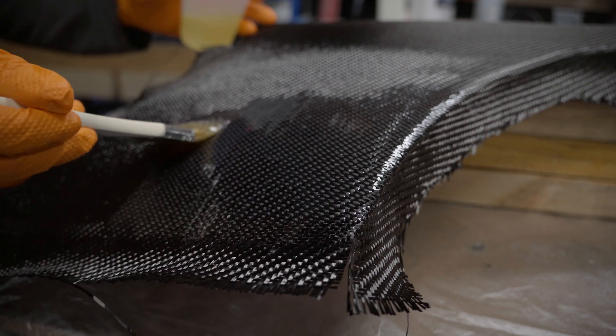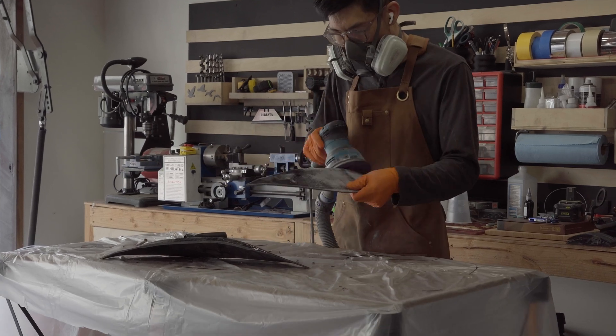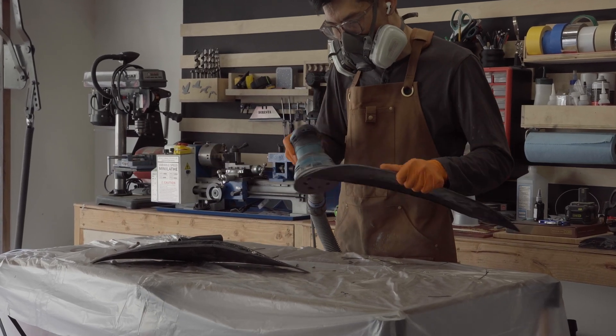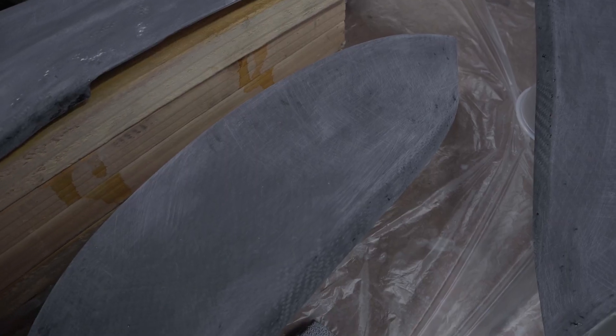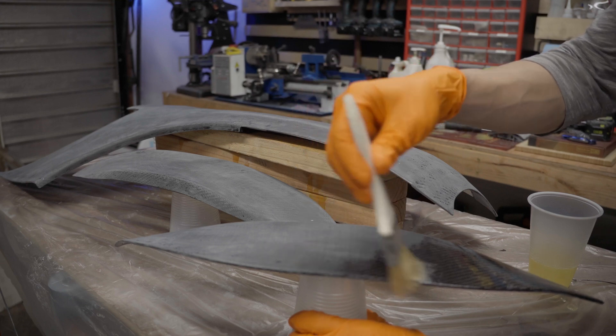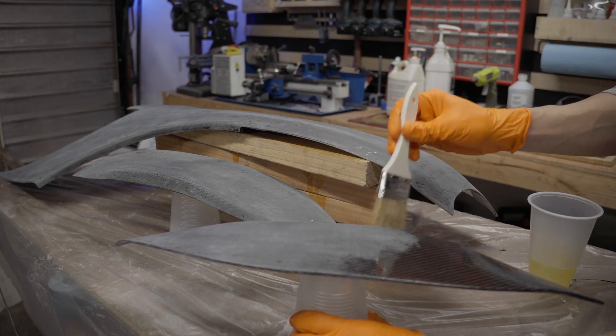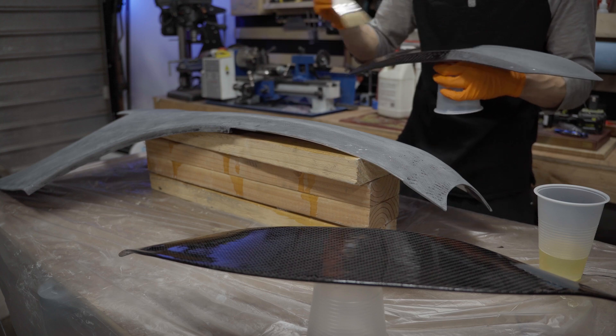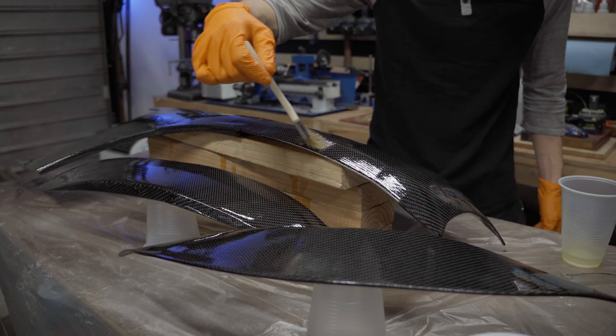The next day, I sanded from 80 grit to 120, then finished off with 220 making sure to have a smooth surface. I also cleaned and sanded the edges and then wiped everything off with some isopropyl alcohol and brushed on a thin layer of epoxy. I did 3 coats total, waiting about 1 and a half hours between coats. Then I let the whole thing cure overnight.